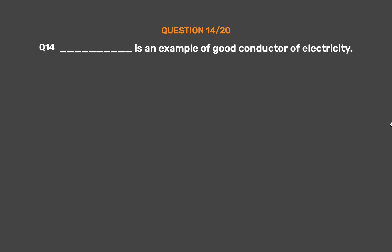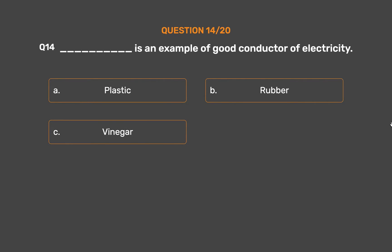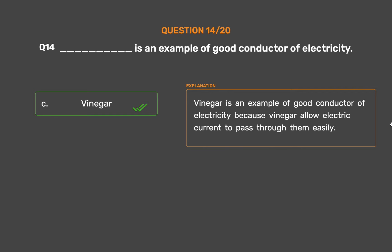Question No. 14: Underscore is an example of a good conductor of electricity. Option A: Plastic. Option B: Rubber. Option C: Vinegar. Option D: Wood. The correct answer is Option C: Vinegar. Vinegar is an example of a good conductor of electricity because vinegar allows electric current to pass through it easily.